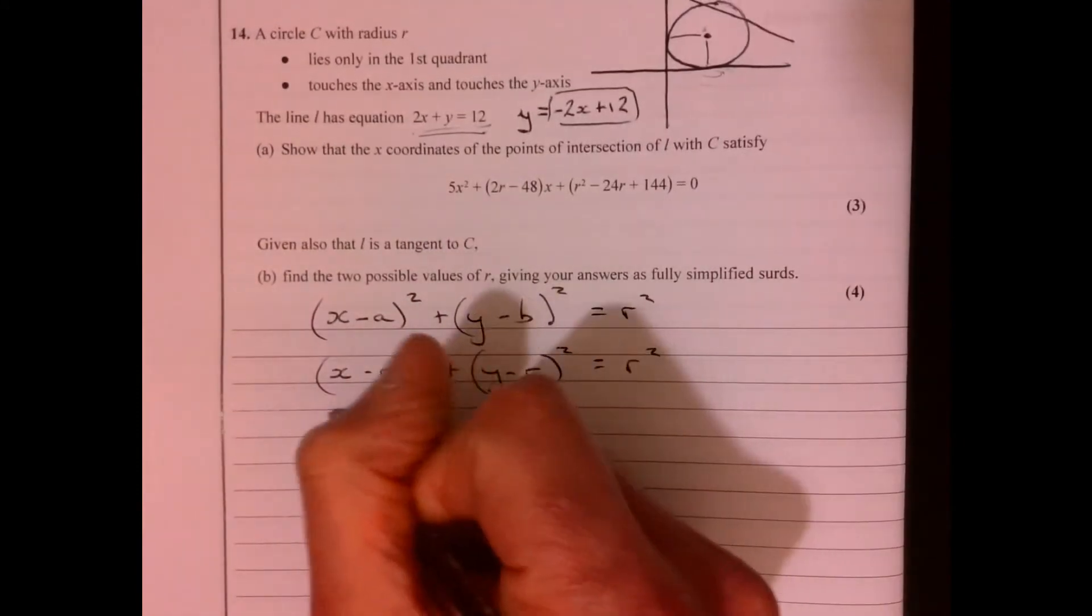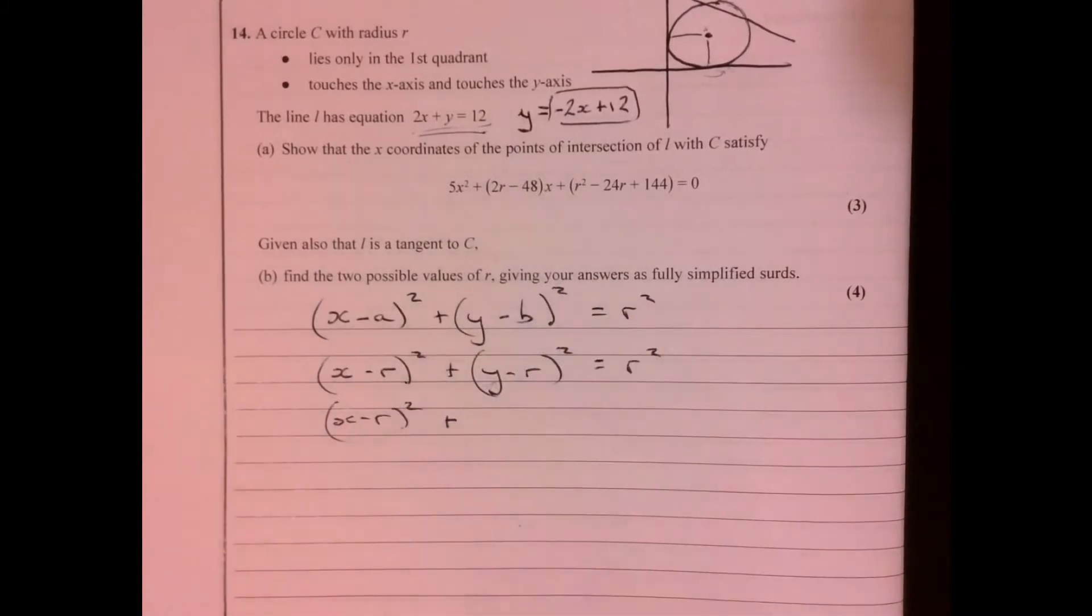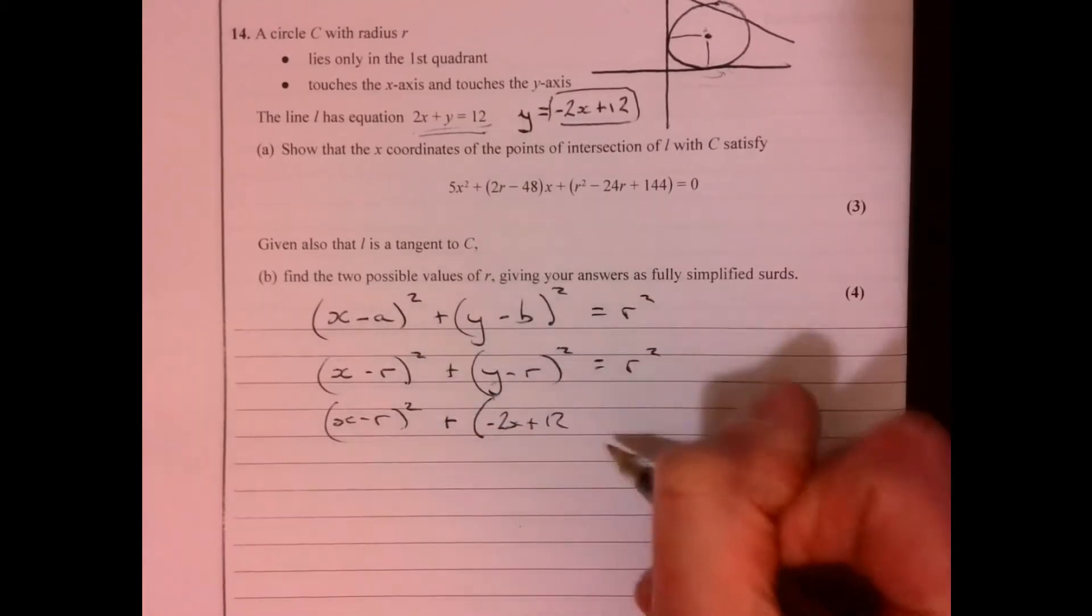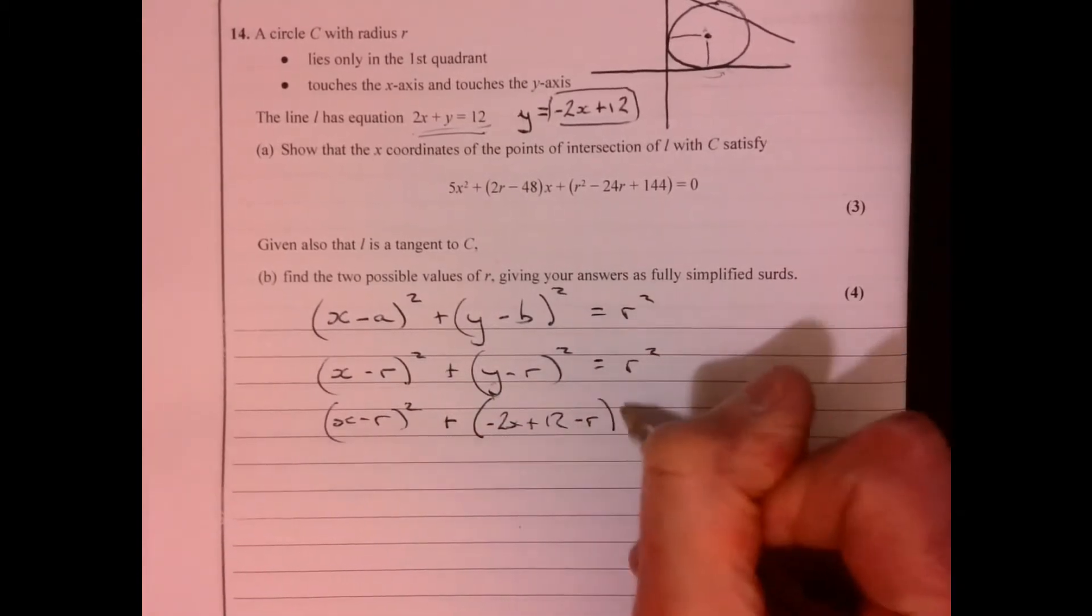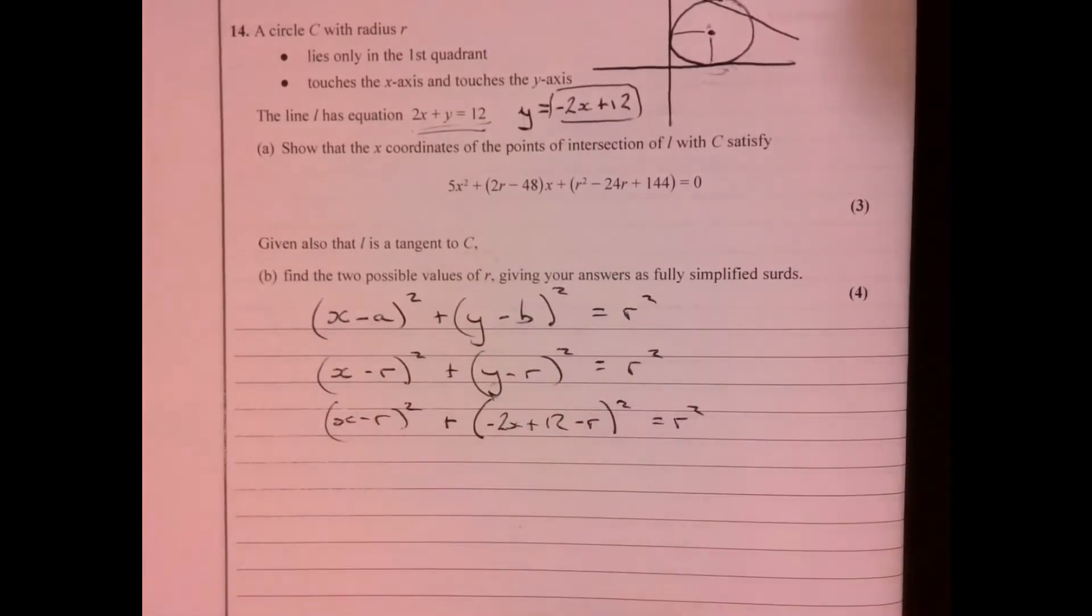Now all we've got to do is take that bit and just pop it in there. So then that gives us (x - r)² plus, so we're going to have (-2x + 12 - r)² equals r².